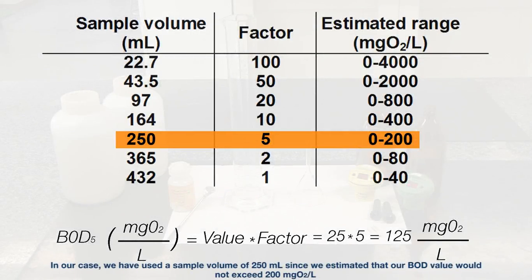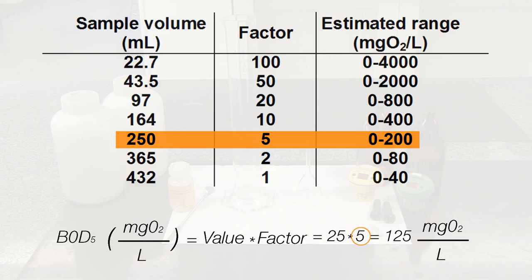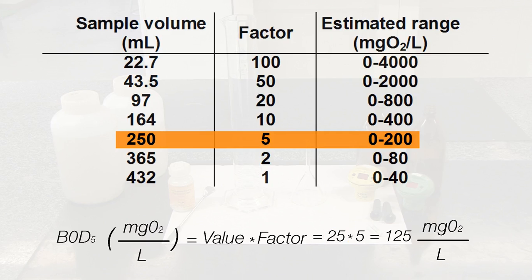In our case, we have used a sample volume of 250 milliliters, since we estimated that our BOD value would not exceed 200 milligrams of oxygen per liter. Then, as you can see in the table, the value of the factor to be used is 5. Now we proceed to multiply this factor by the value of the manometric cap display, which is 25. With that, we obtain a final BOD5 value of 125 milligrams of oxygen per liter.